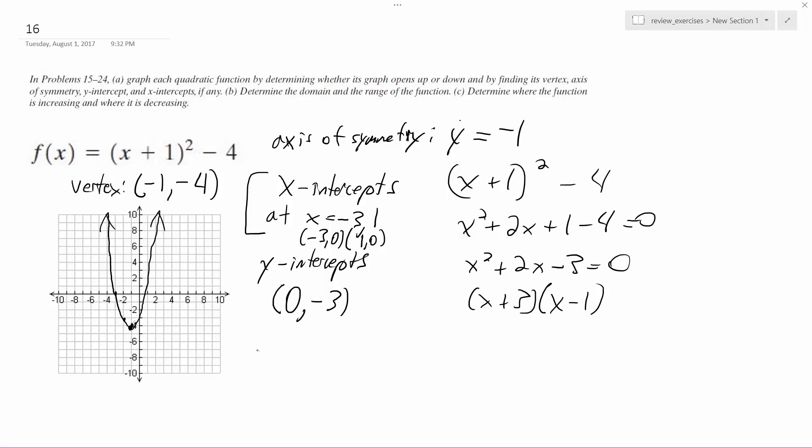All right, and then, so B, determine the domain. The domain is negative infinity to infinity, because there's no restrictions on what you can select for x. And the range is going to be, and actually it's a bracket because it includes it, negative four to infinity.